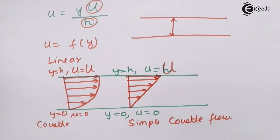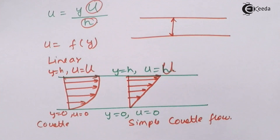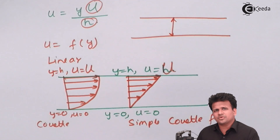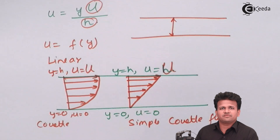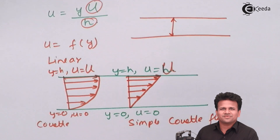I hope you have understood how to derive Couette flow and simple Couette flow by applying boundary conditions and substituting them into the solution of the Navier-Stokes equation. Thank you.